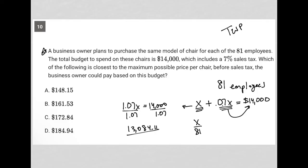So again, if I want to know how much per chair, I would divide that value by 81. So divide by 81 in my calculator. And what I'm getting is that each chair can cost up to $161.53. So that would be my answer, choice B.